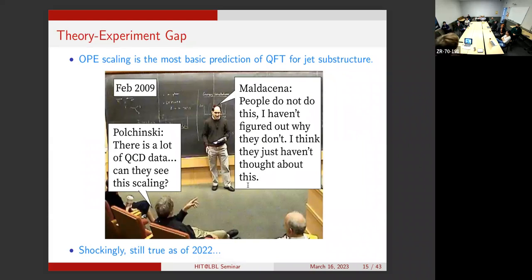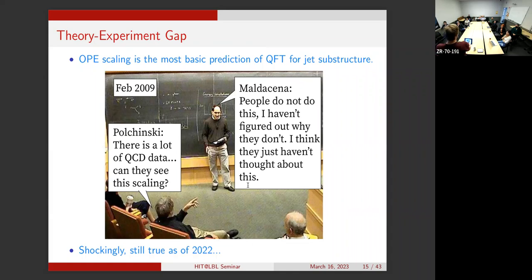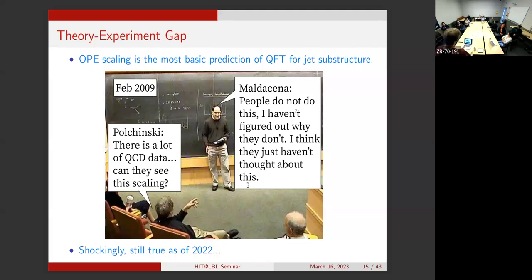This is something that was introduced around 2008. There's a nice historical exchange between Polchinski, David Gross, and Maldacena: Maldacena presented this, saying if you go to the LHC and do this you should see this very nice scaling behavior. Polchinski rightly said you have a huge amount of QCD data—how come this hasn't been done before? The answer was 'people don't do this, I don't know why, maybe none of us did it because we said the world isn't conformal.' Part of this is a communication issue between very formal theorists and experimentalists.